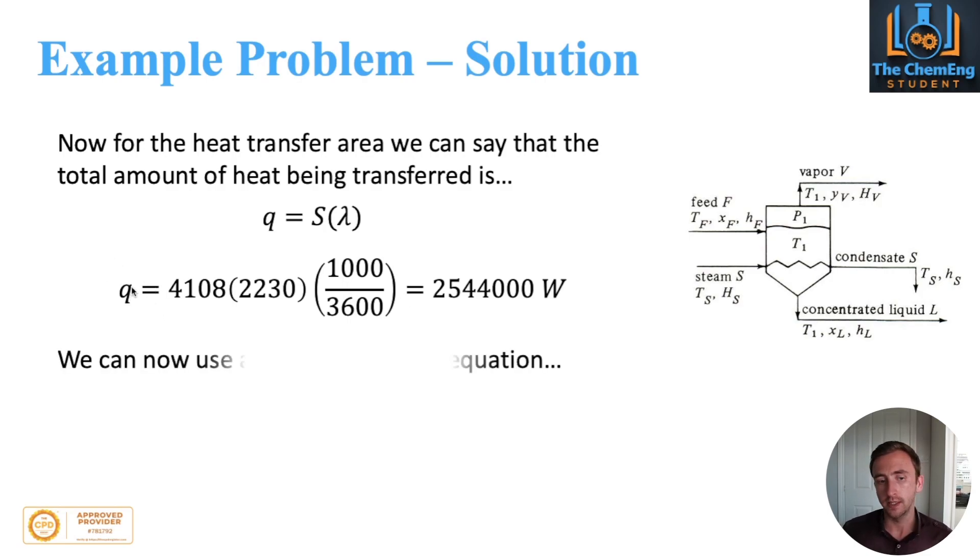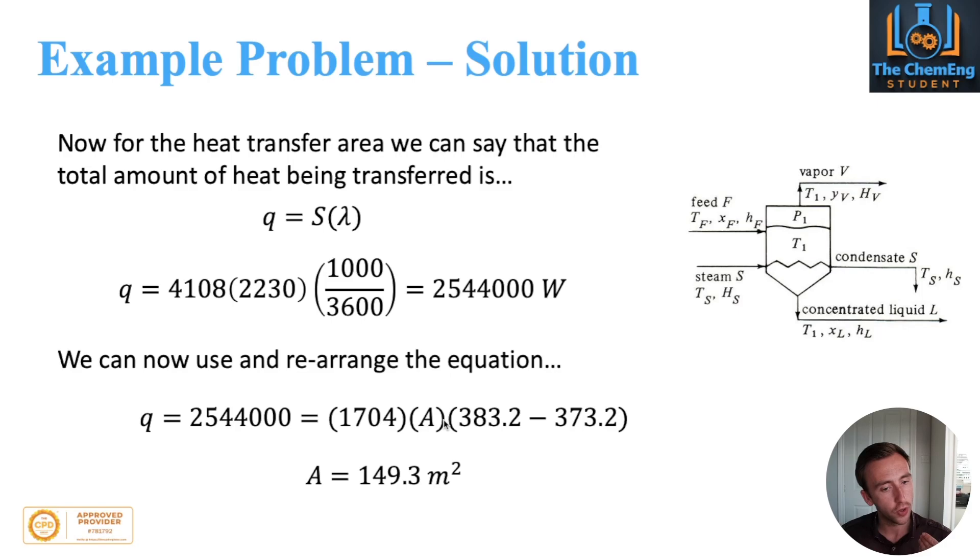Now we know what Q is, we can then rearrange Q equals U A delta T, because the only unknown here is A. We now know what Q is, that's the amount of heat or the power. We know the overall heat transfer coefficient. We know our temperature difference. The only thing we don't have is A. When you solve the numbers, you take these away from each other, multiply it by that, divide it by 2.544 million. We work out that in order for this evaporator to meet the criteria, we need a heat transfer area of 149.3 meters squared. And that's how you would go about solving a single effect evaporator system.